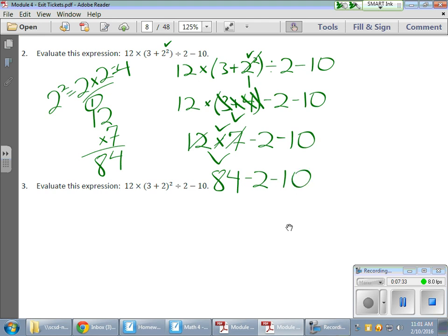Now I have two of the same operations. And when that happens, the same authority, I'm going to go left to right. So here's the one on the left. So 84 minus 2 gives me 82. Done with those guys. Here's my subtract 10. I love doing these things. It's a very methodical process. It's like solving a big old puzzle. So 82 minus 10 gives me 72. And that's all she wrote.